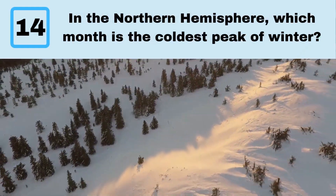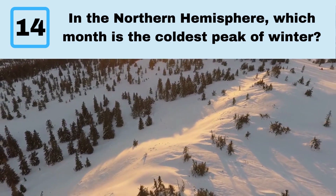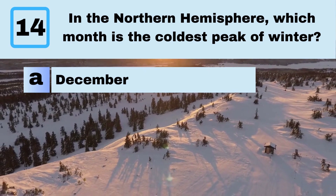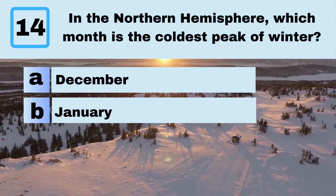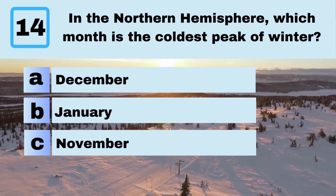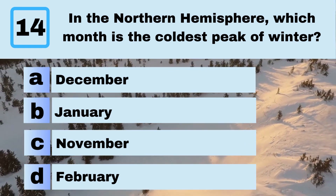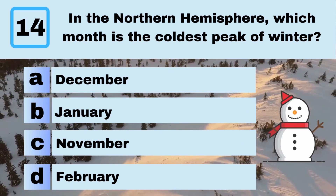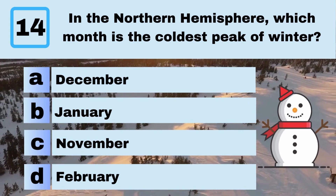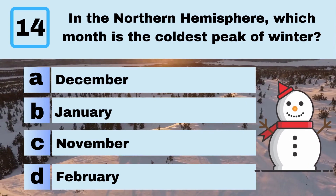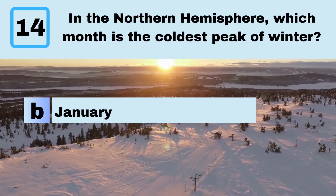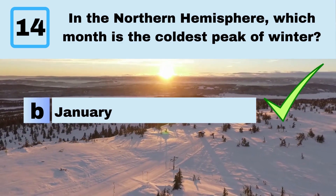Question 14. In the Northern Hemisphere, which month is the coldest peak of winter? A. December. B. January. C. November. D. February. Answer: B. January.